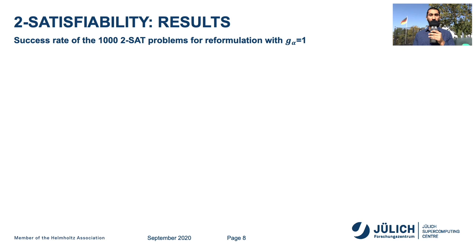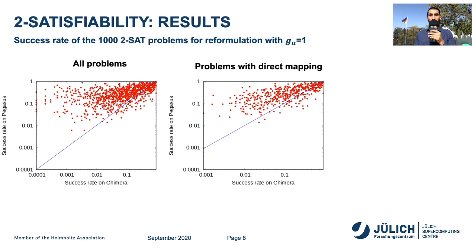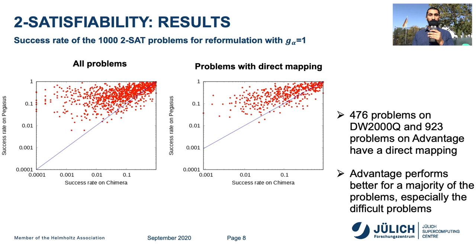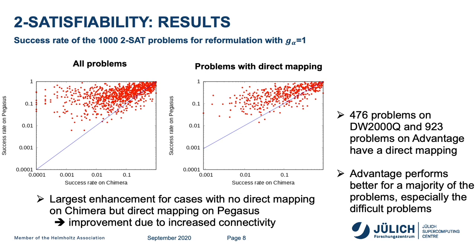We show the results by plotting the success rate of 1000 different 2-SAT problems with the reformulation such that the scaling factor is set to 1. We plot on the y-axis the success rate on Pegasus and on the x-axis the success rate on Chimera. We note that 476 problems on D-Wave 2000Q and 923 problems on Advantage have a direct mapping. Advantage performs better for a majority of the problems, especially the difficult ones. The largest enhancement is seen for the cases with no direct mapping on Chimera but those having a direct mapping on Pegasus, and this improvement is due to increased connectivity.